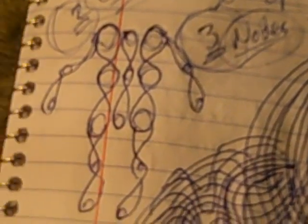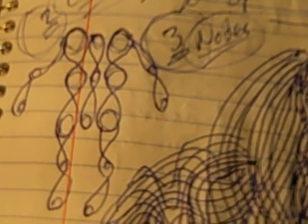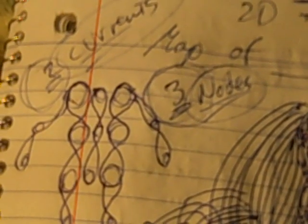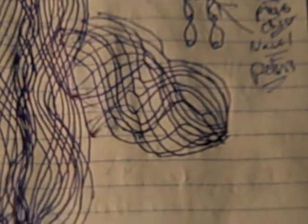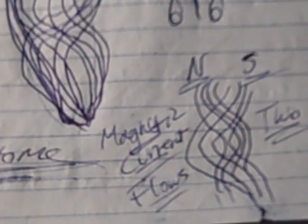So what I have here is a grid of the human body based on a three-node network, and the two magnetic current flows right here, north and south. So you have these two magnetic current flows, the north and the south, interweaving with each other.